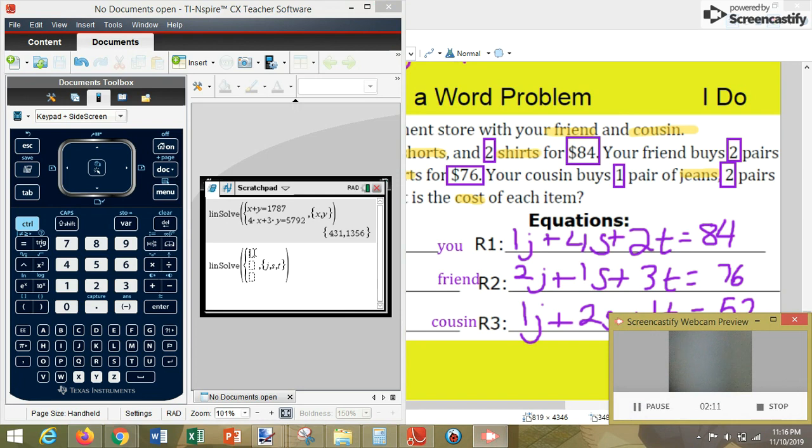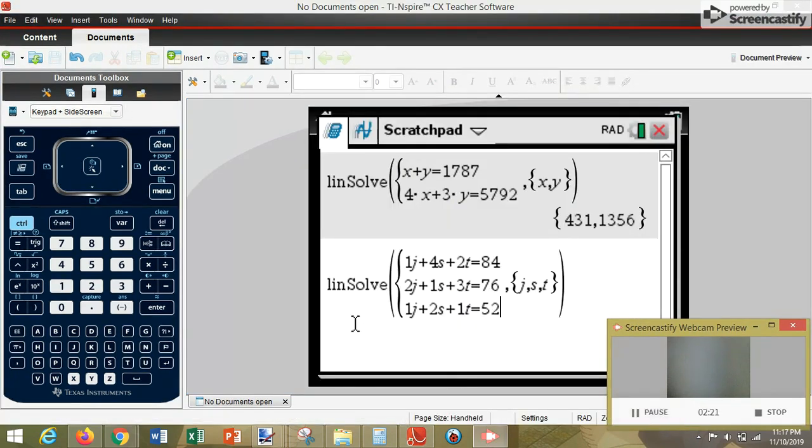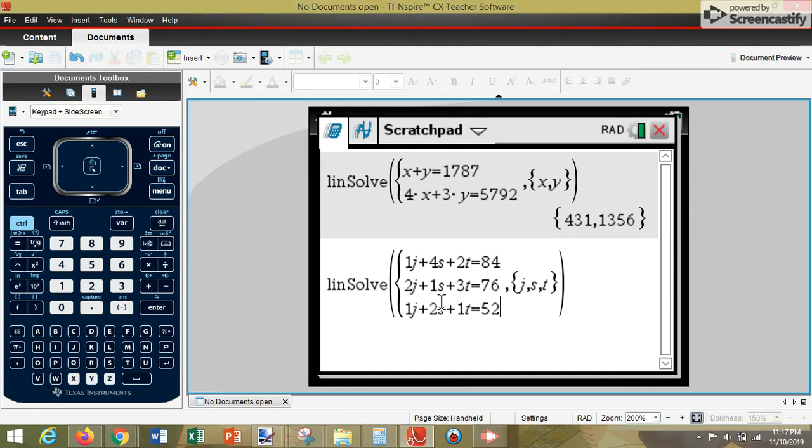You want to type the first equation into the first box. Go down, second equation in the second box. Go down, the third equation in the last box. Once you've typed these in, double check that everything looks correct. And then press enter.